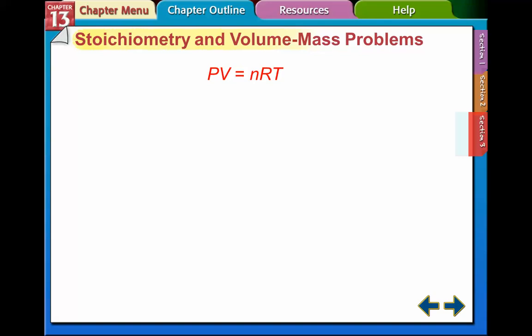PV equals nRT. Remember that for most of the time if we use the pressure in atmospheres, we're going to use the value of R equals 0.0821. That's the most common one we use.